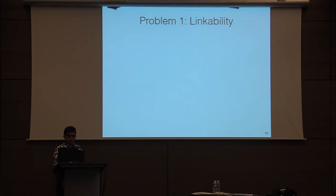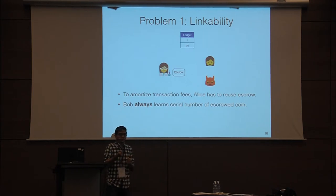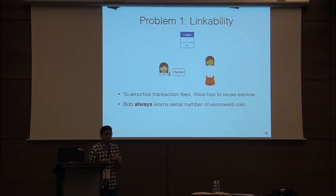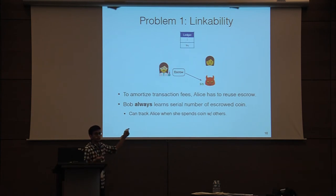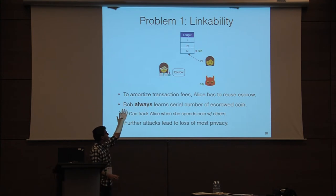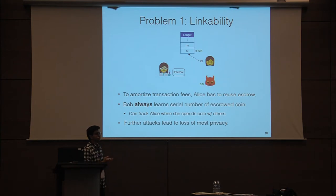Let's dive into each issue. Since Alice wants to amortize the transaction fees she has to reuse the escrow every time, but Bob wants to be convinced she's using a valid escrow, so he needs to learn the serial number of the escrow coin. This creates an issue: let's say Alice transacts with Bob — it's a null payment but Bob still learns the serial number. Next she goes to another merchant, Carol, and this time it's a macro payment. Carol gets the serial number and appends the transaction to the ledger. Bob now sees a coin that was used with him has been spent, so Alice doesn't have the strong anonymity guarantee of ZeroCash. There are other attacks that lead to even further loss of privacy, so this naive idea doesn't quite work.